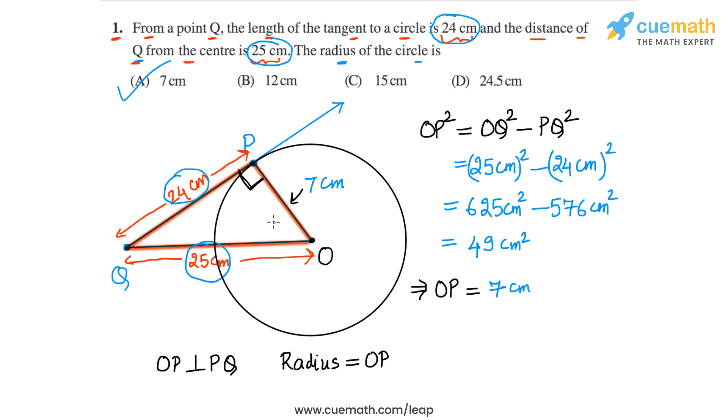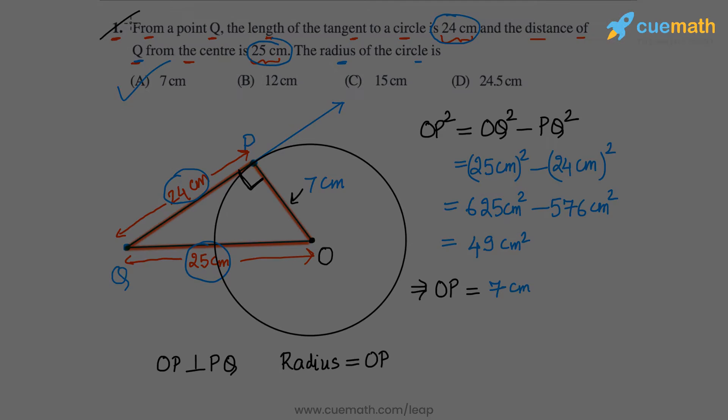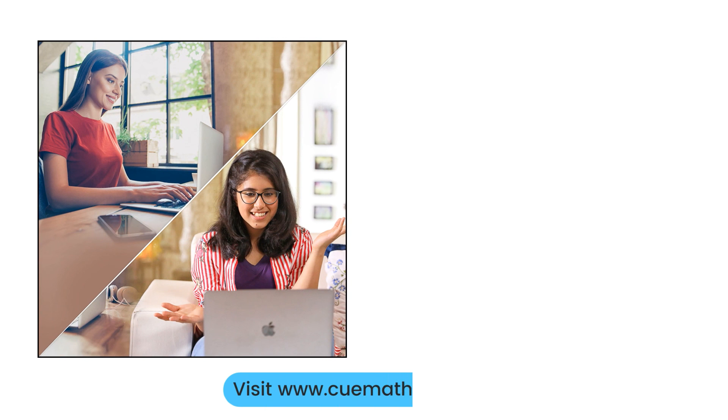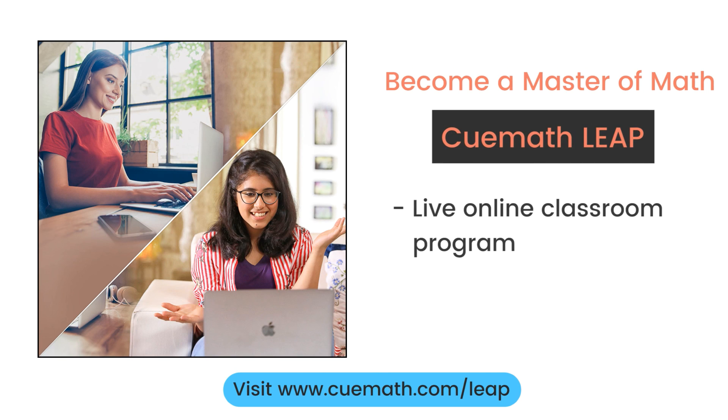So the radius OP is 7 centimeters, which is the value given in option A, so option A is the correct answer for this question. That completes question number one. To know more about how Cuemath can help you become a master of math, explore Cuemath LEAP, a live online classroom program taught by highly experienced and committed teachers.